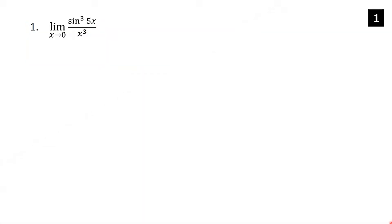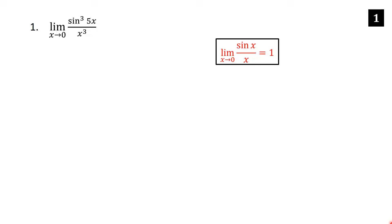We want the limit as x goes to zero of sine cubed 5x over x cubed. We're going to use the fact that the limit as x goes to zero of sine x over x equals one. If you ever forget this limit, it's easy to derive using L'Hôpital's rule, but it's definitely a good one to remember since it's used quite often.